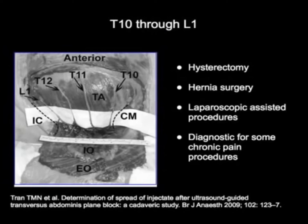Here is a gross dissection of the nerves in the transversus abdominus plane. This block can provide effective postoperative analgesia for hysterectomies, hernia surgery, and laparoscopic-assisted procedures, as well as other procedures involving incisions below the umbilicus.